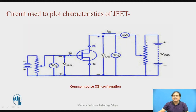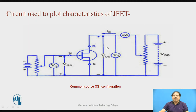In this circuit, the voltage from drain to source is varied by a battery called VDD. We can also vary the voltage from gate to source by a battery connected from gate to ground. An ammeter measures the current in the drain, a voltmeter measures the voltage from drain to source, and another voltmeter measures the voltage from gate to source.